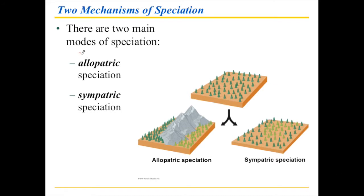Allo means 'other.' Patric — if you think of somebody who is a patriot, they are involved in support of their country. So allopatric means 'other country.' Sym means 'same,' so sympatric means 'same country.' Other country speciation or same country speciation — that tells you pretty much what's going to happen here.